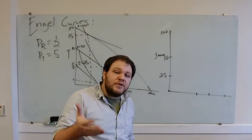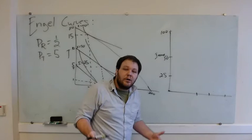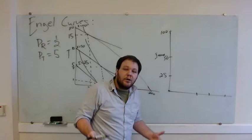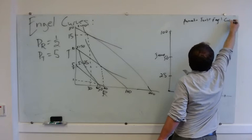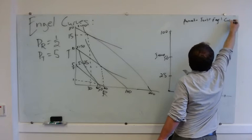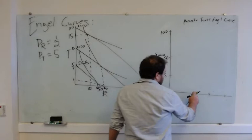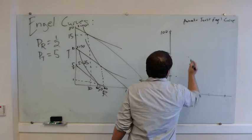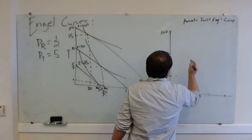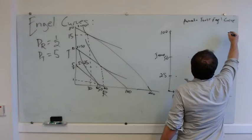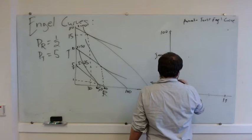We could also take the information from what we're calling our income expansion path and use it to plot an Engel curve for toast, for avocado toast. Our Engel curve for avocado toast. And if we did this, we'd see that when we had just 25 bucks, we bought a single slice of toast. When our income went up to 50 bucks, we increased our toast consumption to 4. And when our income went up to 100 bucks, we increased our toast consumption to 15. So, if we plotted this Engel curve, it might look like this.